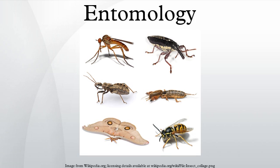Like other scientific specialties, entomologists have a number of local, national, and international organizations. There are also many organizations specializing in specific sub-areas, including the Amateur Entomologist Society, Deutsches Entomologisches Institut, Entomological Society of America, Entomological Society of Canada, Entomological Society of Japan, International Union for the Study of Social Insects, Kansas Entomological Society, Netherlands Entomological Society, Royal Belgian Entomological Society, and the Royal Entomological Society of London.